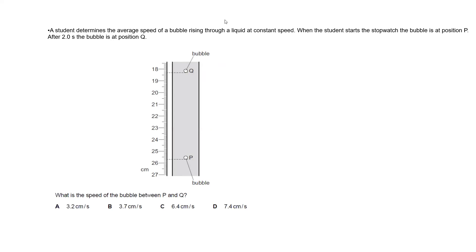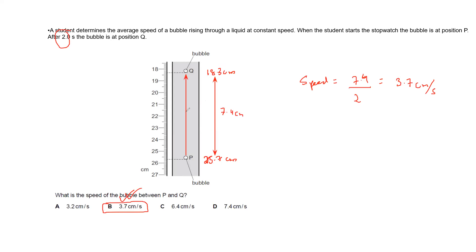Why do we subtract? Because the bubble is rising up — it was at the position of 25.7, then it rose for 2 seconds to a new position at 18.3. To find the distance travelled from point P to point Q we subtract, because we know the time from P to Q so we need the distance from P to Q as well.